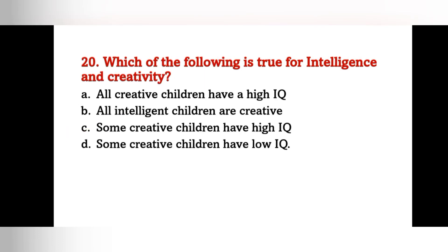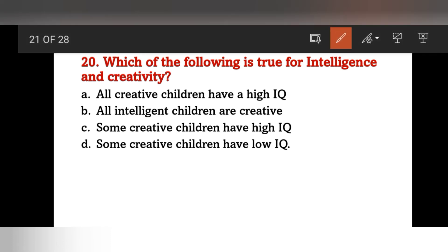Which of the following is true for intelligence and creativity? Options: all creative children have a high IQ, all intelligent children are creative, some creative children have high IQ, or some creative children have low IQ? The answer is C — some creative children have high IQ. Not all creative children have high IQ and not all intelligent children are creative.